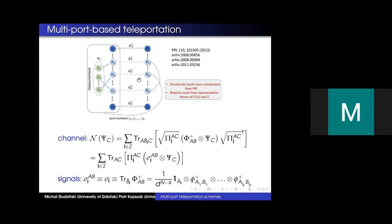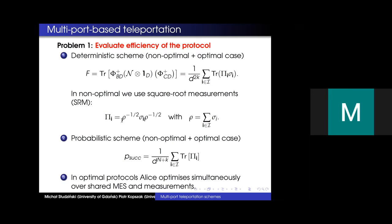In our MPBT scheme, parties share EPR pairs. Alice performs a joint measurement on half of the EPR pairs and the state to be teleported, then transmits the measurement outcome to Bob, who picks up his ports in the right order depending on the classical message. The channel in the picture is described by measurements π_i and signal states σ_i, which come from tracing out over all of Bob's ports except those pointed by the multi-index i. Our goal is to evaluate the protocol efficiency: fidelity in the deterministic scheme and probability of success in the probabilistic scheme.